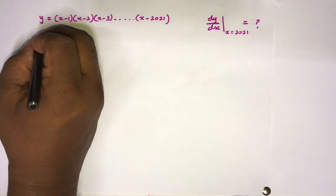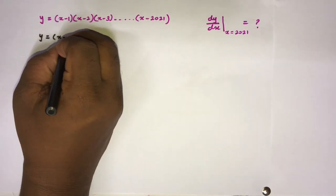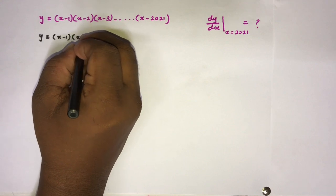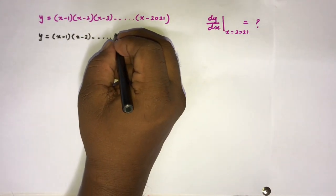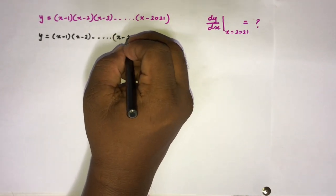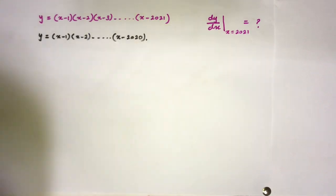Let's begin. First of all, I'm going to write y equals (x-1)(x-2)...(x-2020), and the last term (x-2021).